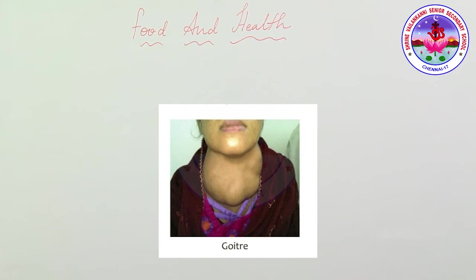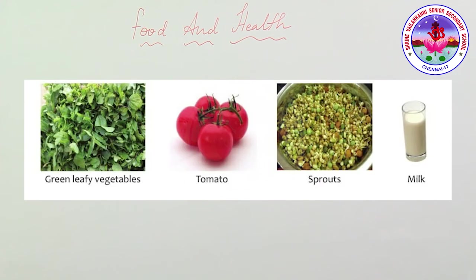To prevent beriberi, eat foods rich in vitamin B like cereals, pulses, green leafy vegetables, whole grains, tomatoes, milk, and liver. Lack of vitamin A in the diet causes night blindness. A person with night blindness finds it very hard to see in dim light. The eyes become dull, triangular patches appear on the white portions of the eyes, and the skin becomes dry and scaly.